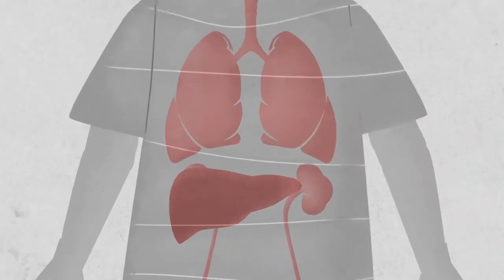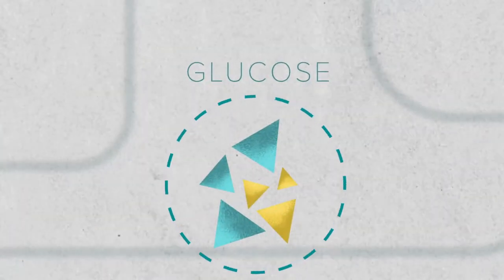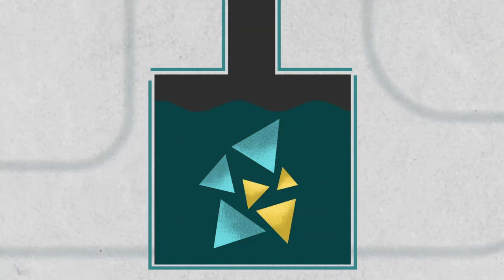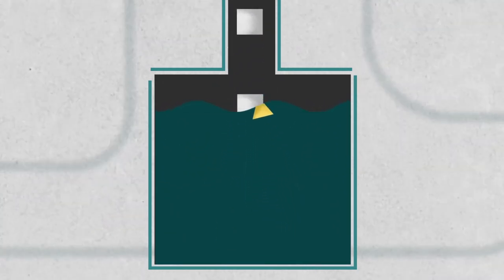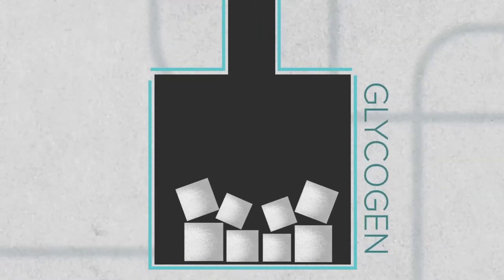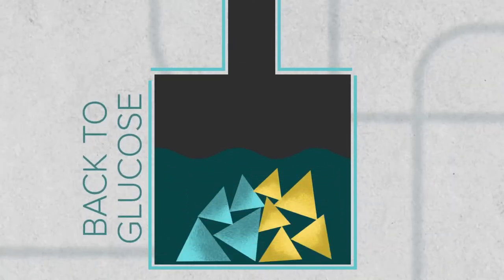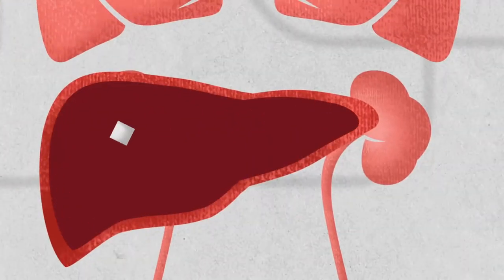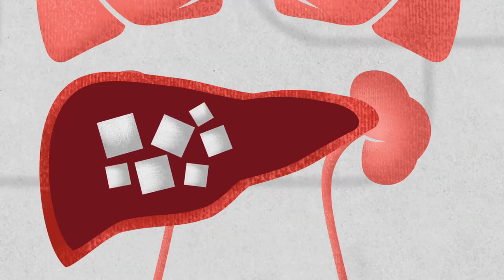It serves as a warehouse of glucose inside the body. When there is excess glucose in the body, it converts glucose into glycogen bundles and stores it. When there is less glucose in the body, it converts glycogen back into glucose. Once the liver is full of glycogen, it starts converting glycogen into fatty acids.